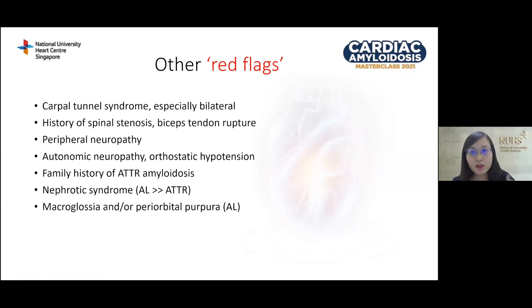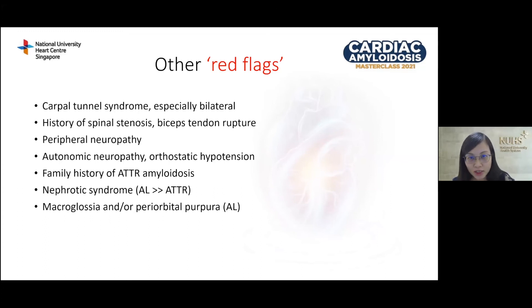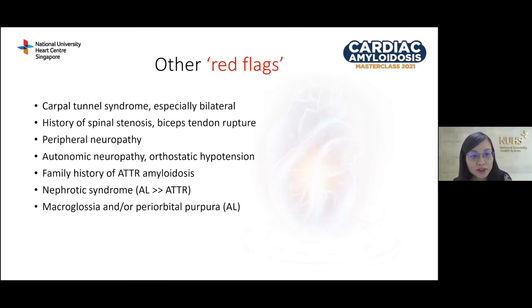Other red flags include previous history of bilateral carpal tunnel syndrome, spinal stenosis, and bicep tendon rupture, which can occur many years before the onset of heart failure. Many patients with amyloidosis also have peripheral neuropathy, autonomic neuropathy, and orthostatic hypotension. Family history is important, especially if a family member has already been diagnosed with amyloidosis. Nephrotic syndrome, macroglossia, and periorbital purpura are more common in light chain amyloidosis.